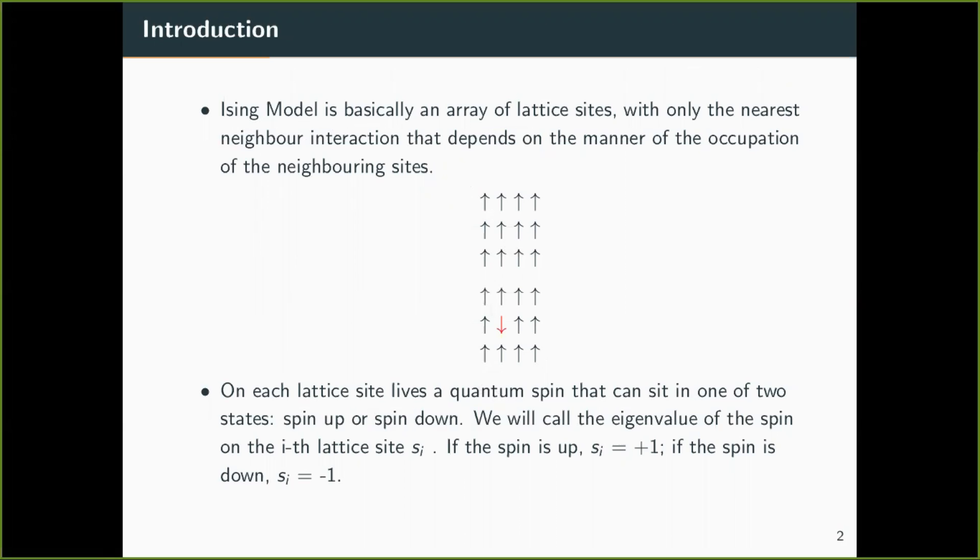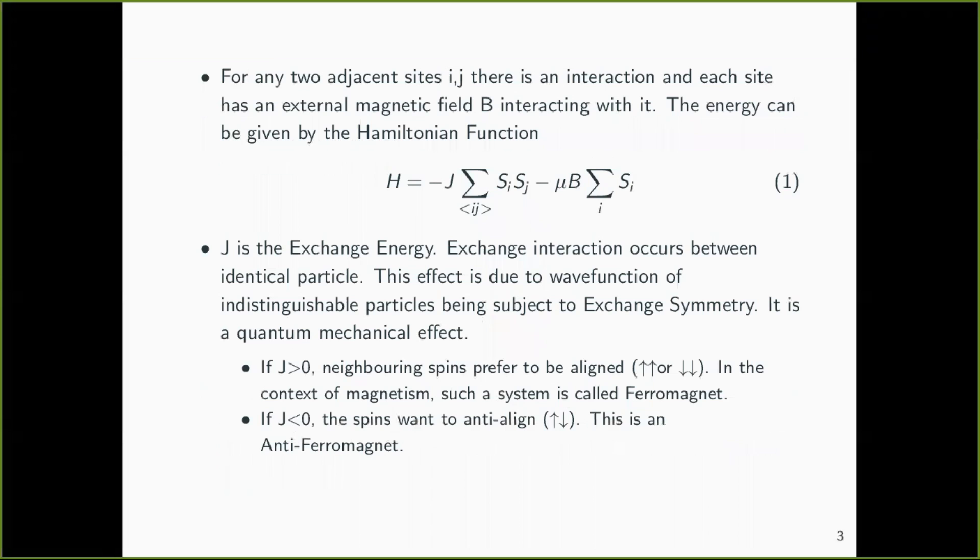So the energy because of this is called the exchange energy. J is the exchange energy and it occurs between identical particles which are indistinguishable. This effect is due to the wave function of indistinguishable particles and is a quantum mechanical effect.